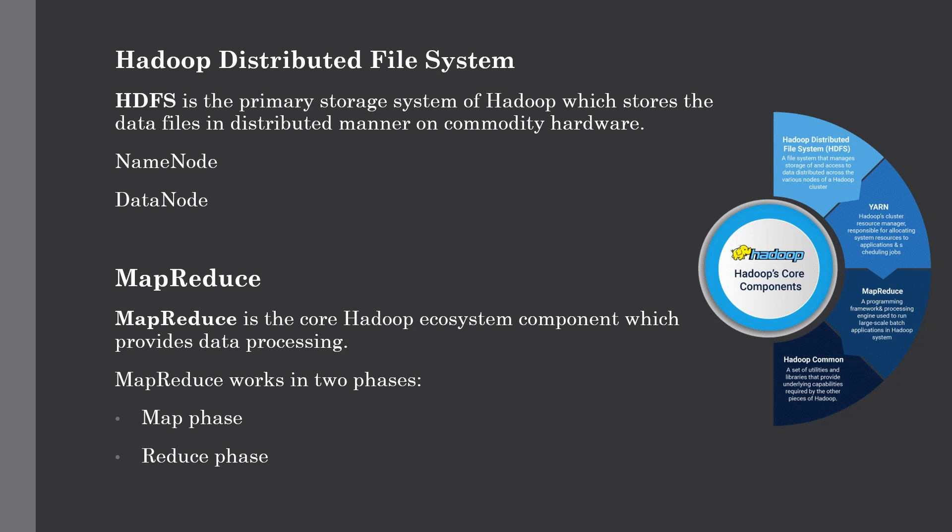The DataNode also performs read and write operations as per the requests provided by clients, and also replicates data to achieve a fault-tolerant system. The next component of the Hadoop ecosystem is MapReduce. MapReduce is the processing layer of Hadoop and also a core Hadoop ecosystem component. MapReduce programs are parallel in nature and are very useful for performing large-scale data analysis.